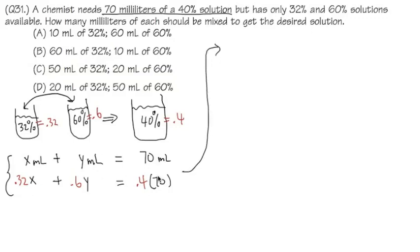Now let's solve this. On the top, ignoring the milliliters, we have x plus y equals 70. That's the first equation. For the second equation, I have 0.32x.